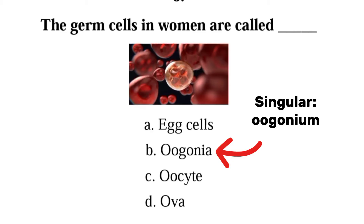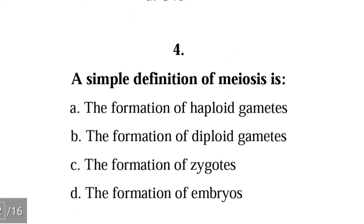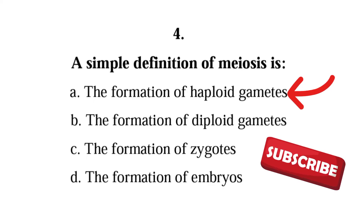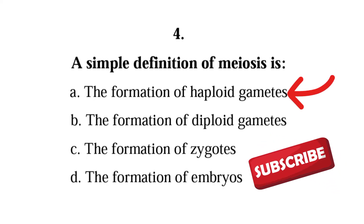Question 4: A simple definition of meiosis is — A. the formation of haploid gametes, B. the formation of diploid gametes, C. the formation of a zygote, D. the formation of embryos. The correct answer is A: meiosis is simply the formation of haploid gametes.